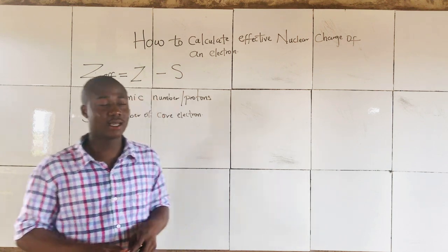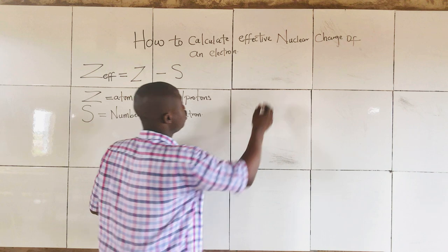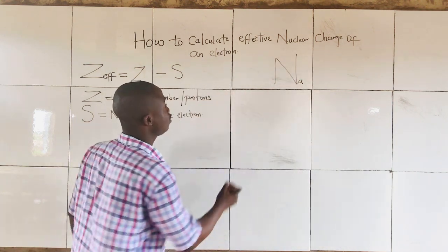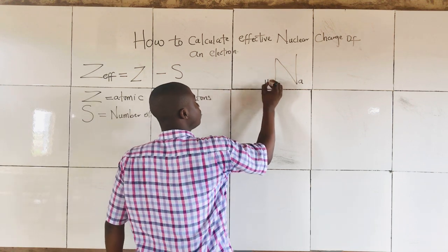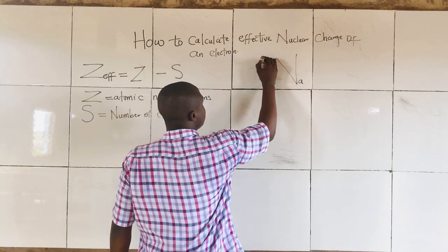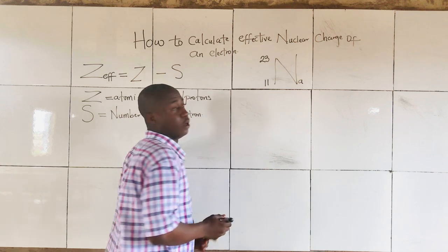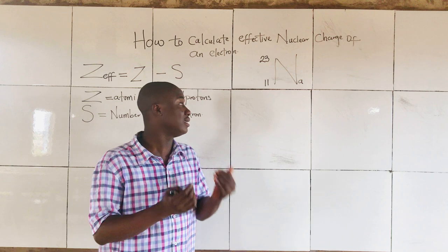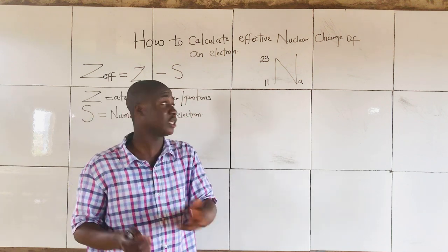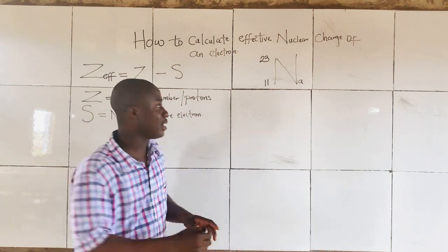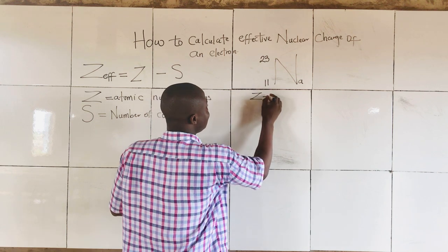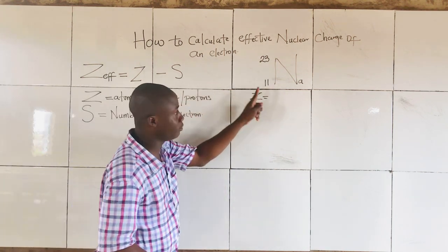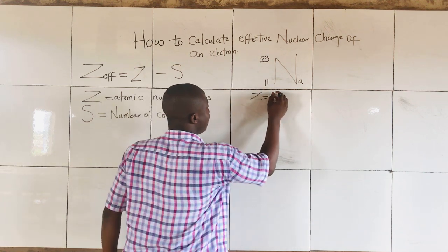Now let's take an example — given sodium atom. We all know that sodium has the atomic number of 11 and the mass number of 23. Now we are asked to calculate the effective nuclear charge of sodium. We now know that Z, the atomic number, is 11.